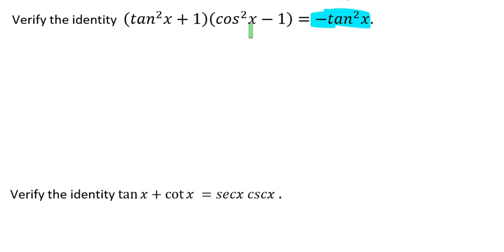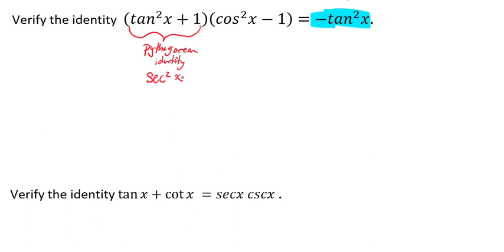Notice that this portion comes from our Pythagorean identity, and it actually ends up equaling the secant squared of x.